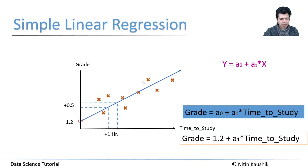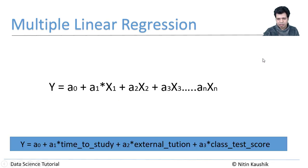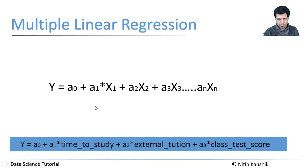In simple linear regression we always have one feature or variable — in our example that was X. But in multiple linear regression we have multiple features or variables: x₁, x₂, x₃, and so on, all appearing in the equation of the line. That's why it's called multiple linear regression.